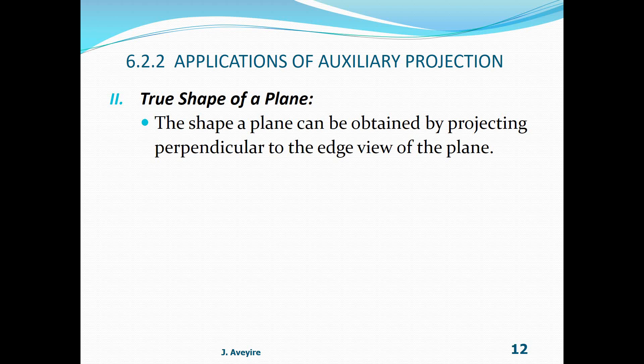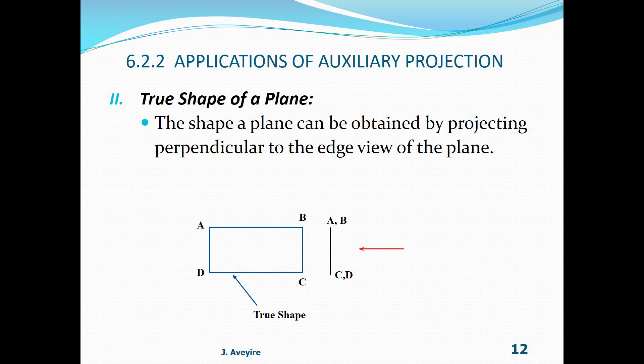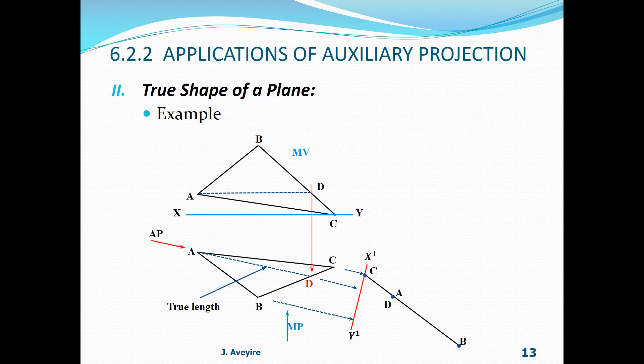True shape of a plane: the true shape of a plane can be obtained by projecting perpendicular to the edge view of the plane. From our previous example, that is the edge view, and therefore we expect the true shape to be obtained in the view given by that projection. The true shape also indicates the true lengths of the various edges.